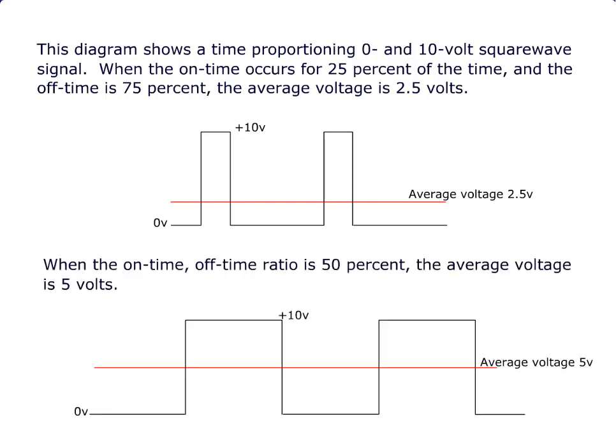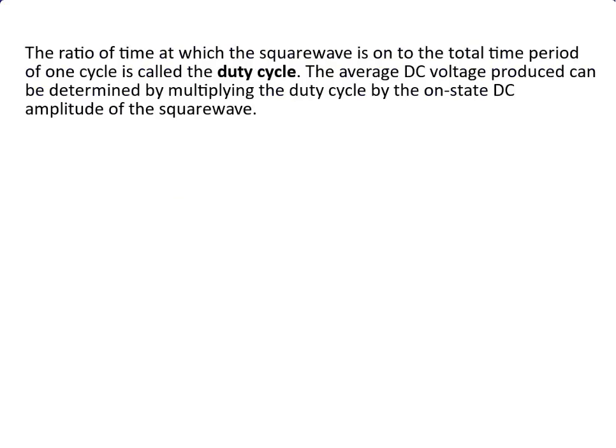When the on time off time ratio is 50%, the average voltage is 5 volts. The ratio of time at which the square wave is on to the total time period of one cycle is called the duty cycle.